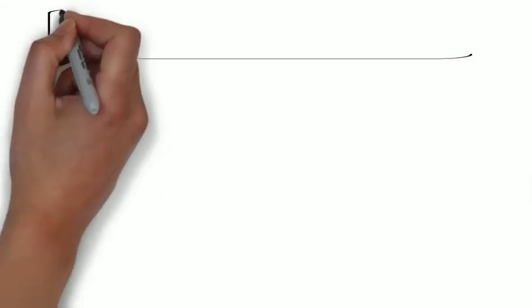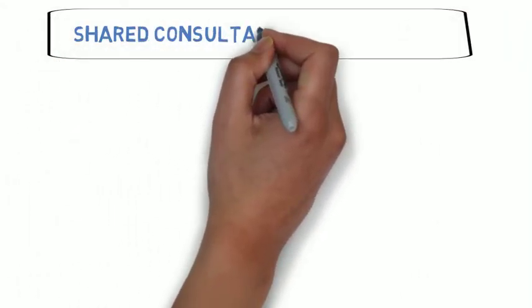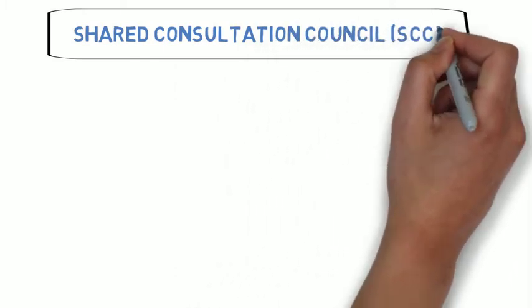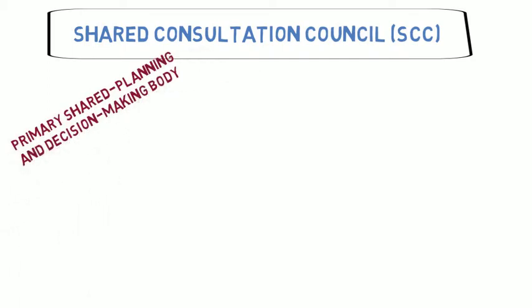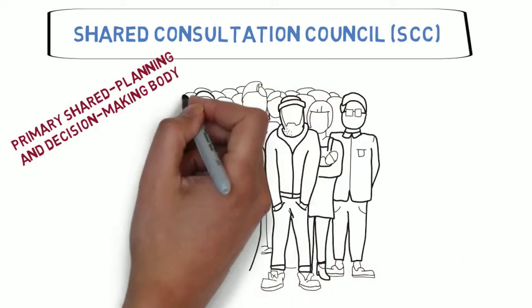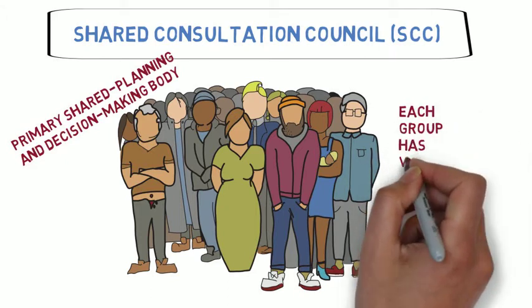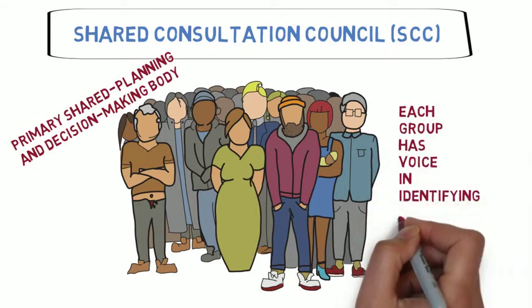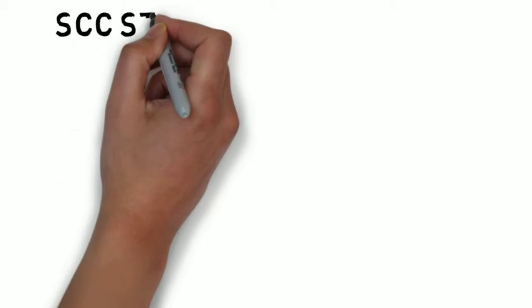To understand the process Southwestern College follows to complete a self-evaluation report and other ACCJC reports, it's important to understand the structure and purpose of the SCC. The SCC is the primary shared planning and decision-making body at Southwestern College. Its membership consists of representatives from every constituency on campus to ensure each group has a voice in identifying, reviewing, and addressing college district needs and priorities.